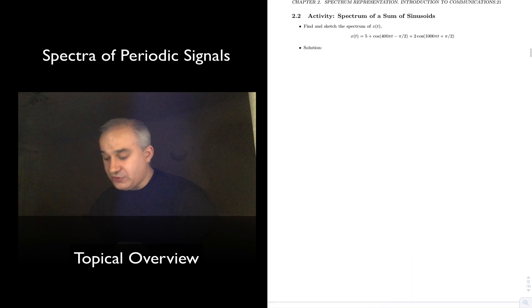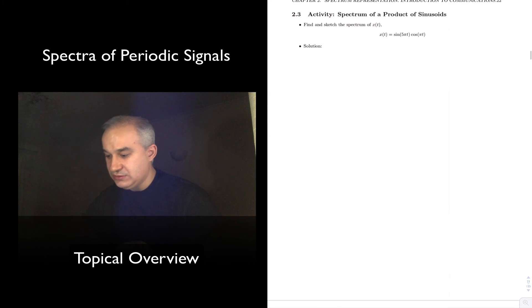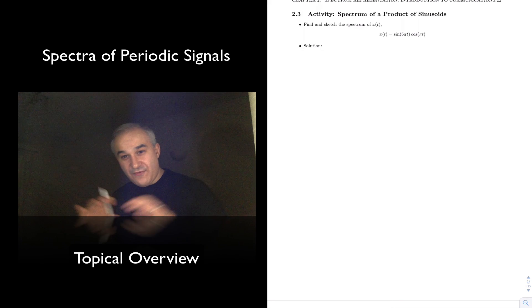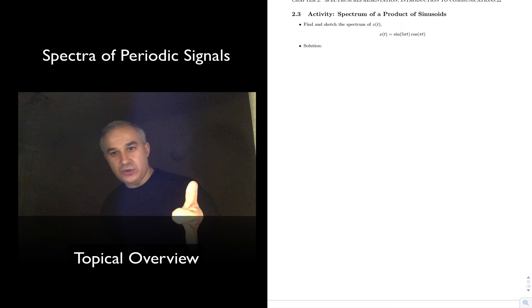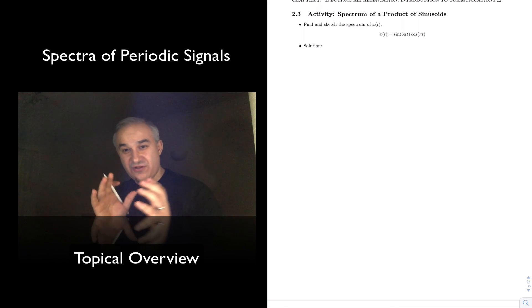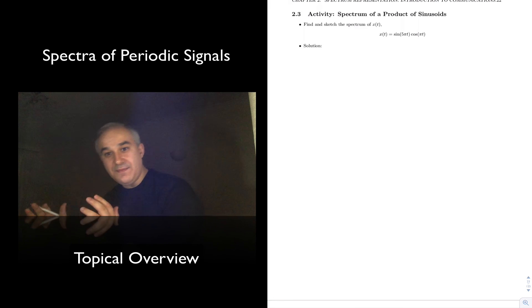Even when you have products of sinusoids also, you do not need to do the Fourier series. Just with Euler formula, decomposing it, and then multiplying through, you are able to find the spectrum of this. And so sum of sinusoids, we are able to do it just by inspection. Product of sinusoids, there is an intermediate step to convert the product, the multiplication, into a sum. And also, no need to do the Fourier series.